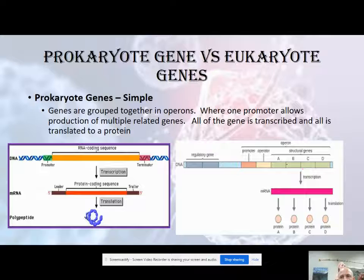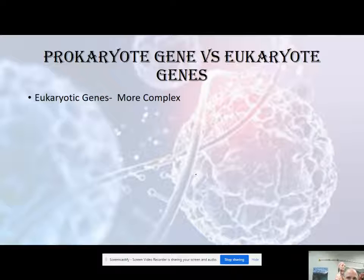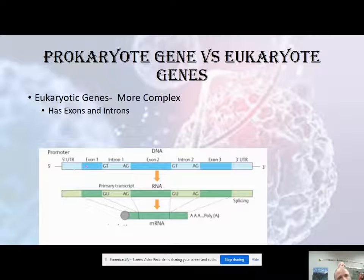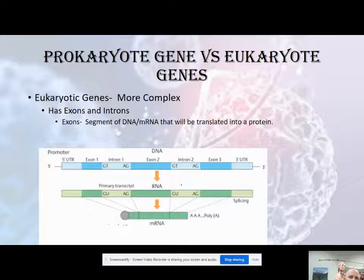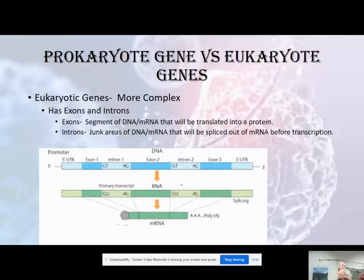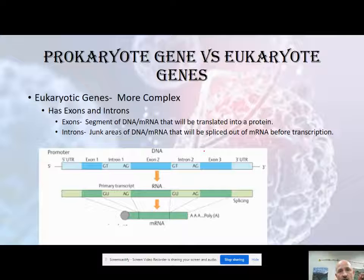Eukaryotic genes are going to be a lot more complex in that they have things called exons and introns. Exons are the good stuff — segments of DNA that will be translated into a protein, actually coded during translation. Introns are junk areas of mRNA that will be spliced out of the mRNA. Introns are still going to be written into the mRNA strand, but we're going to get rid of them later. These segments get cut out when we get into gene regulation.